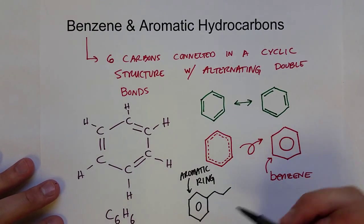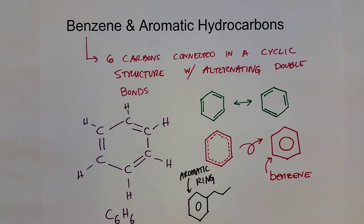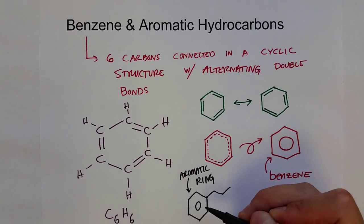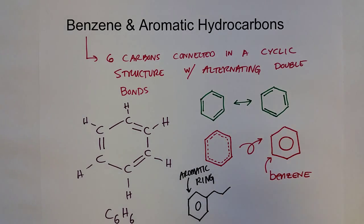So, essentially, when we start talking about functional groups, aromatic rings are a functional group unto themselves. So, anytime you see this hexagonal structure with a circle in the middle, really what they're trying to show is it's a benzene, and if it's on a molecule, we call it an aromatic ring.